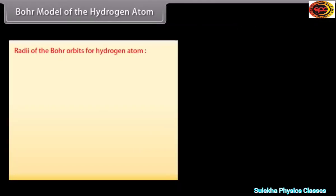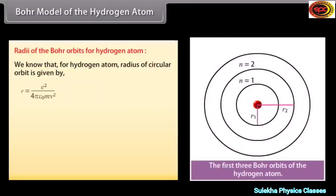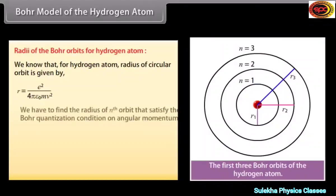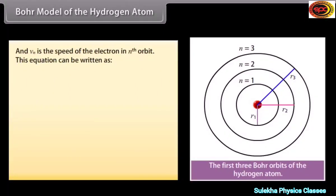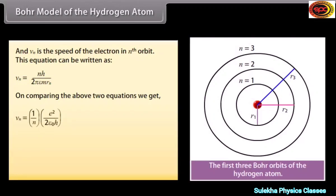Radii of Bohr orbits: For hydrogen, the radius of a circular orbit is R = E²/(4πε₀MV²). Applying Bohr's quantization condition Ln = MVnRn = NH/2π (N = 1, 2, 3…), one finds Vn = (1/N) × E²/(2ε₀H) and Rn = N² × H²ε₀/(πME²) = N²a₀, where a₀ = 0.529 Å.